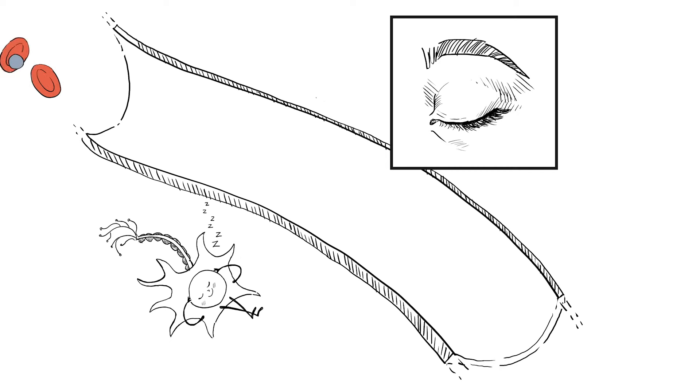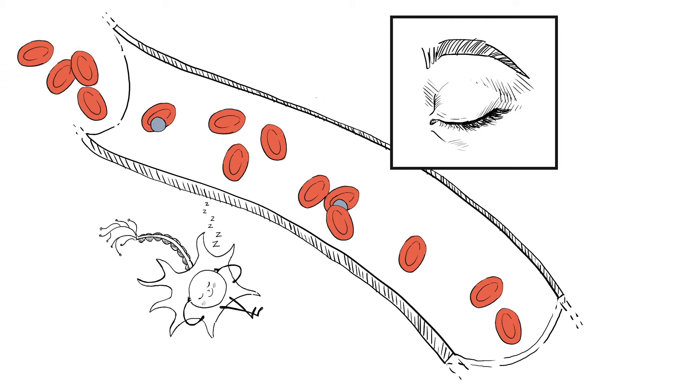Here we can see a blood vessel close to a brain cell in the visual cortex. The brain cell is not very active at the moment.